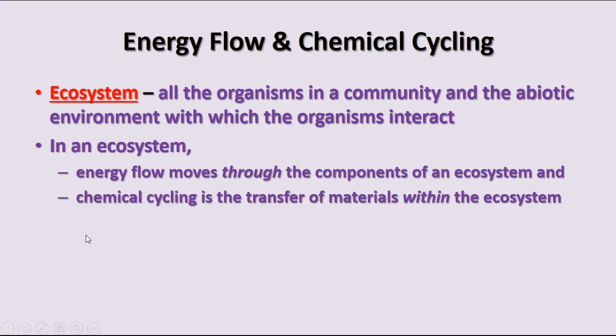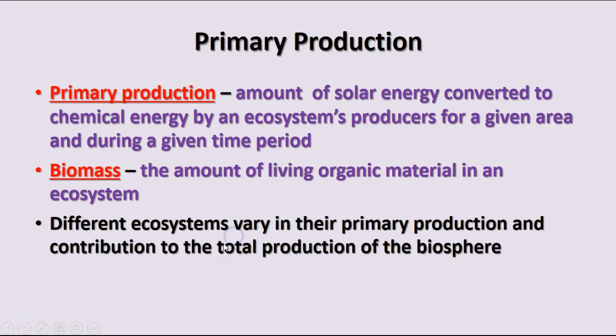Energy flow moves through the components of the ecosystem, because energy comes from outside the ecosystem — ultimately from the sun. Chemical cycling transfers materials within the ecosystem through the feeding relationships between different organisms. Primary production, by definition, is the amount of solar energy converted to chemical energy by the producers in an ecosystem for a particular area during a given time period.